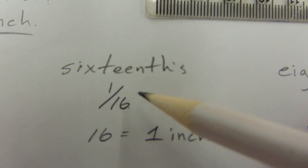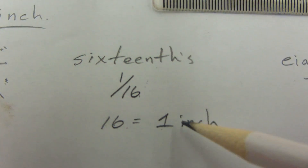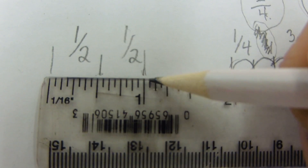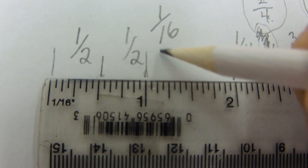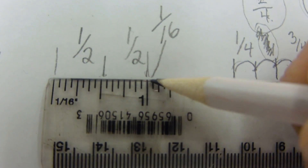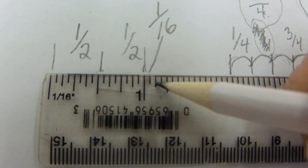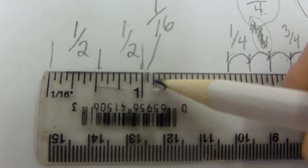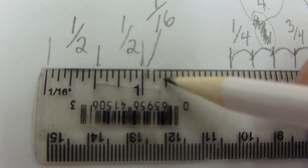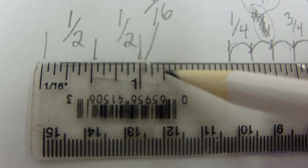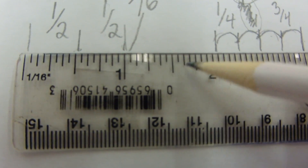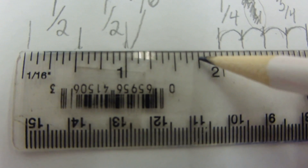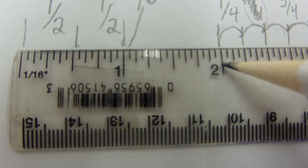Then we get to sixteenths, which is the smallest division — 16 of those equal one inch. That little space right there is one sixteenth. Two sixteenths is the same as one eighth. Three sixteenths, four sixteenths — which is the same as one quarter. Remember, we always reduce when we can. Five sixteenths, seven sixteenths, eight sixteenths, and so forth onwards. Twelve sixteenths can be reduced to three quarters, until we get to one full inch.